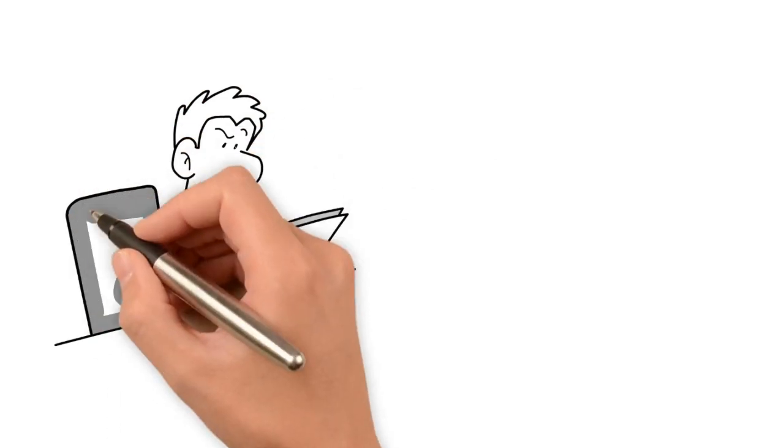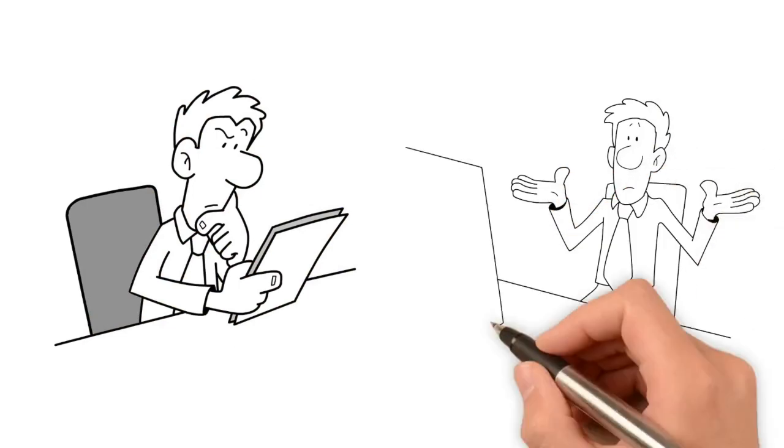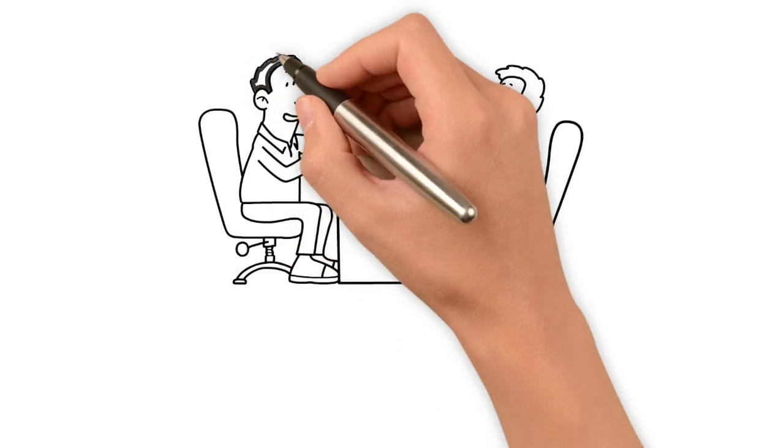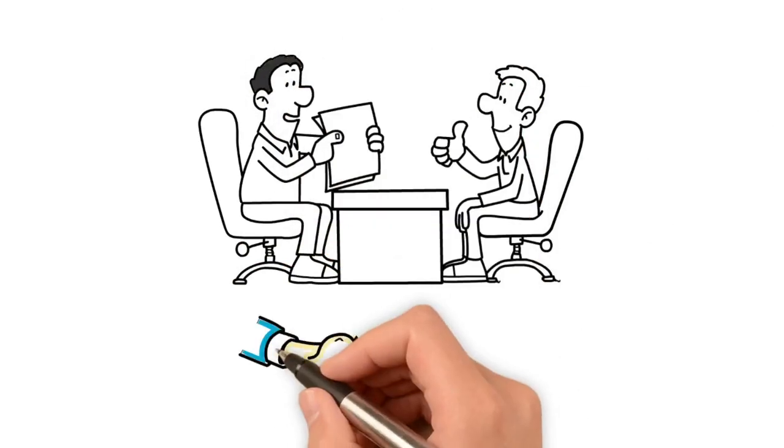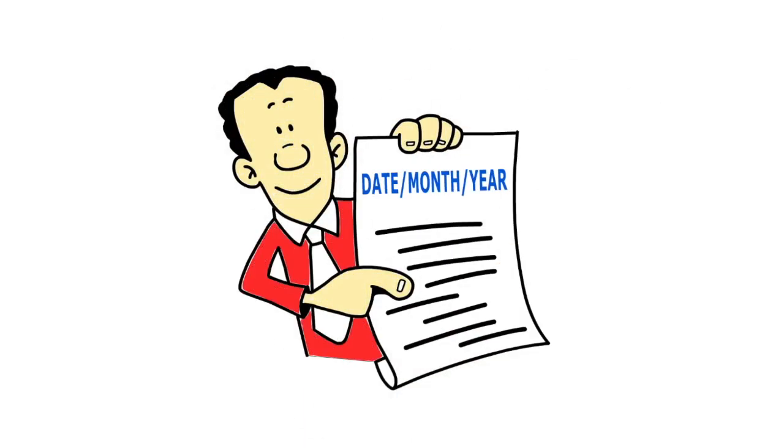This is a real bummer, since this is likely the opposite effect you were hoping for. So what can you do about it? Well, we recommend getting something from the data furnisher in writing prior to paying off the account. This written letter should state the original date of default for the account.